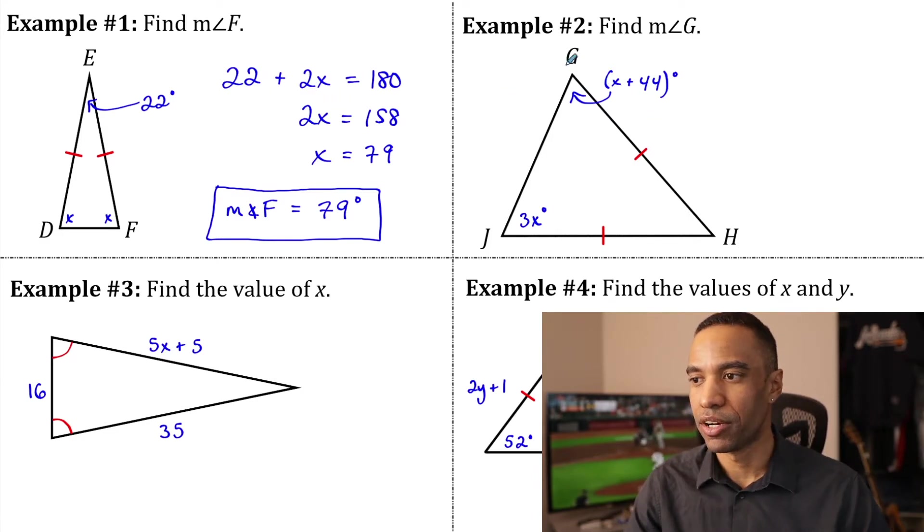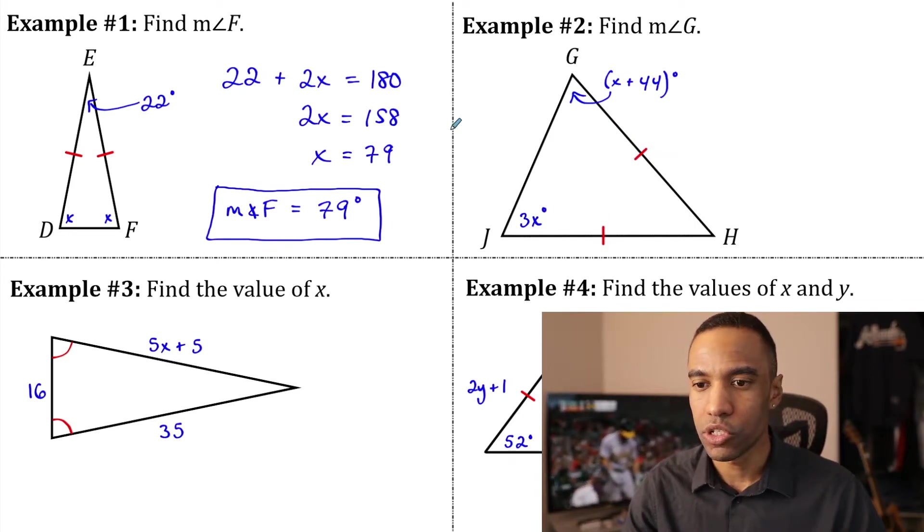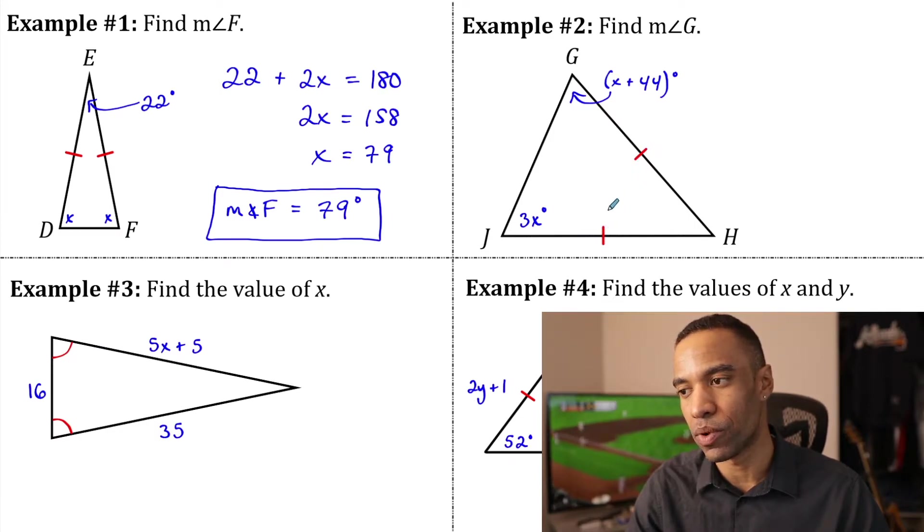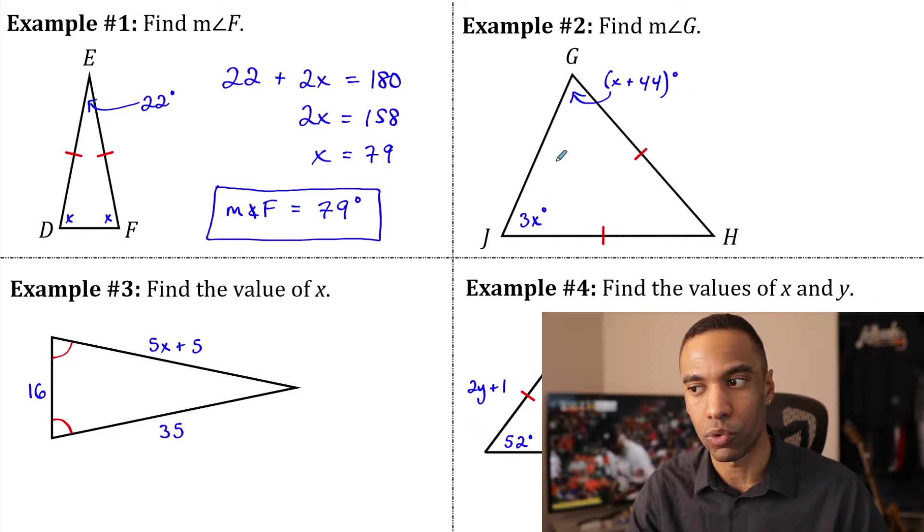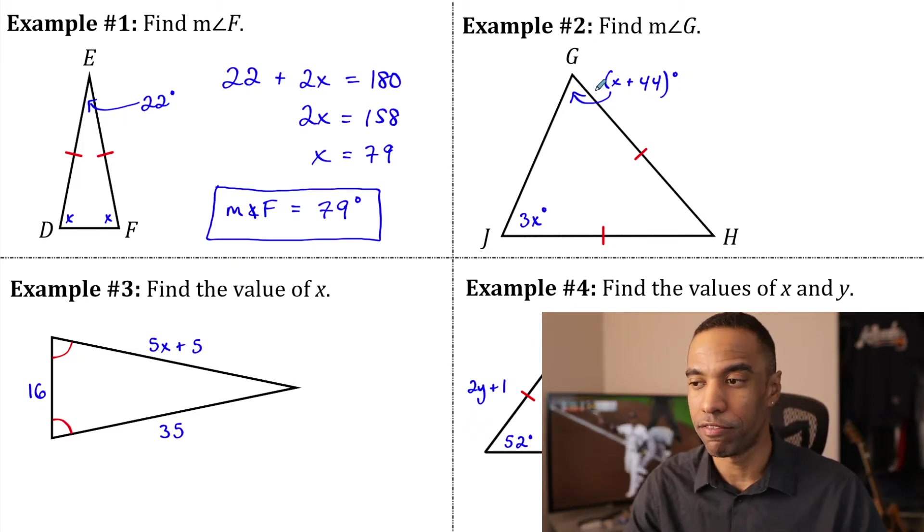And there you have it. Second example here. Same kind of situation. We have an isosceles triangle, only now it's tilted over. Don't just assume that the vertex angle is always the one on top in this case because these are the two congruent sides here. Your vertex angles actually appear. It's these two that are actually equal to each other.